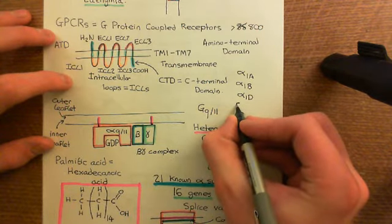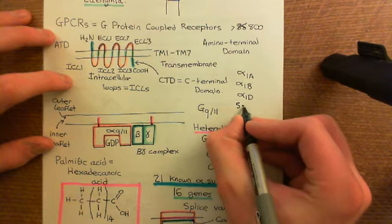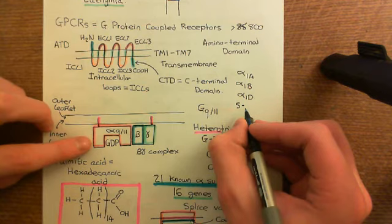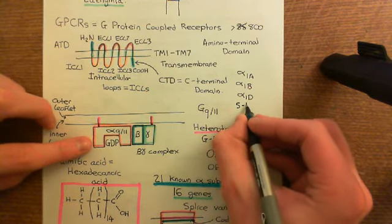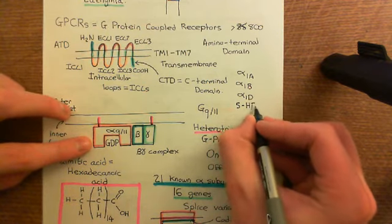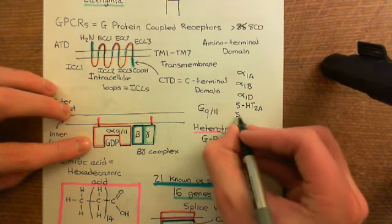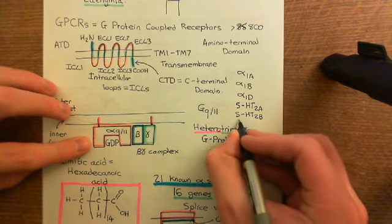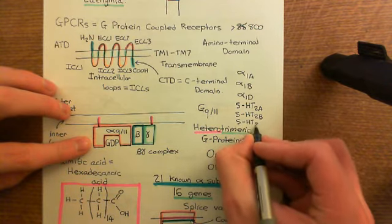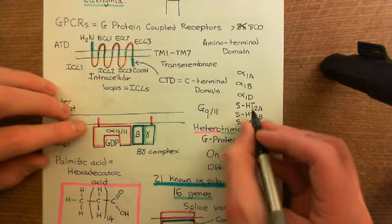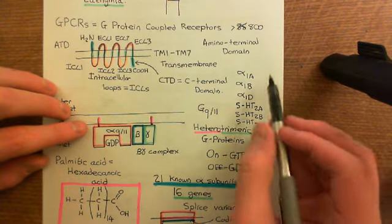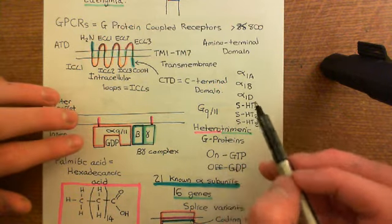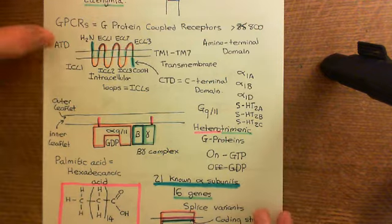In addition, there are three receptors for 5-HT which will activate GQ-11 heterotrimeric G-proteins: the 5-HT2A receptor, the 5-HT2B receptor, and the 5-HT2C receptor. So some of the receptors for monoamines that we've discussed a lot in this video are G-protein coupled receptors which activate heterotrimeric G-proteins of this family.